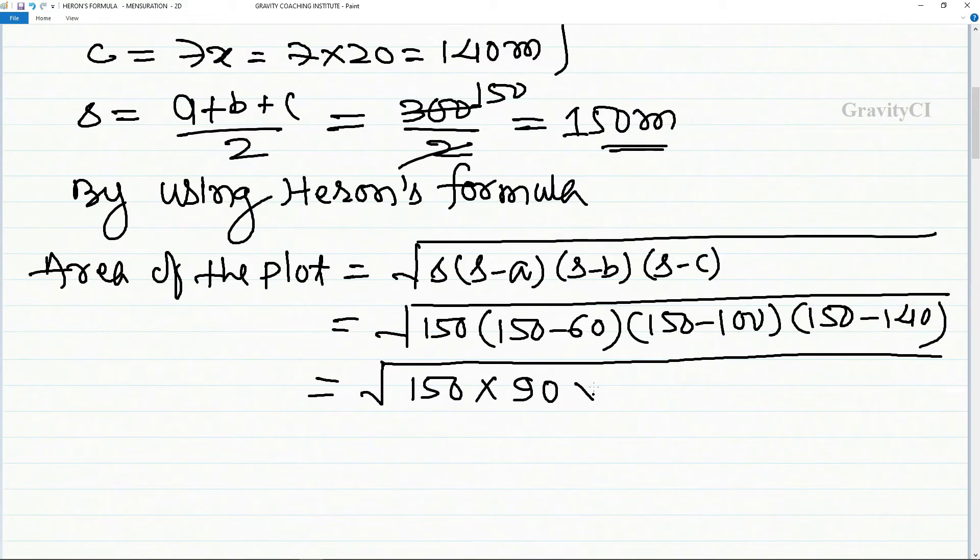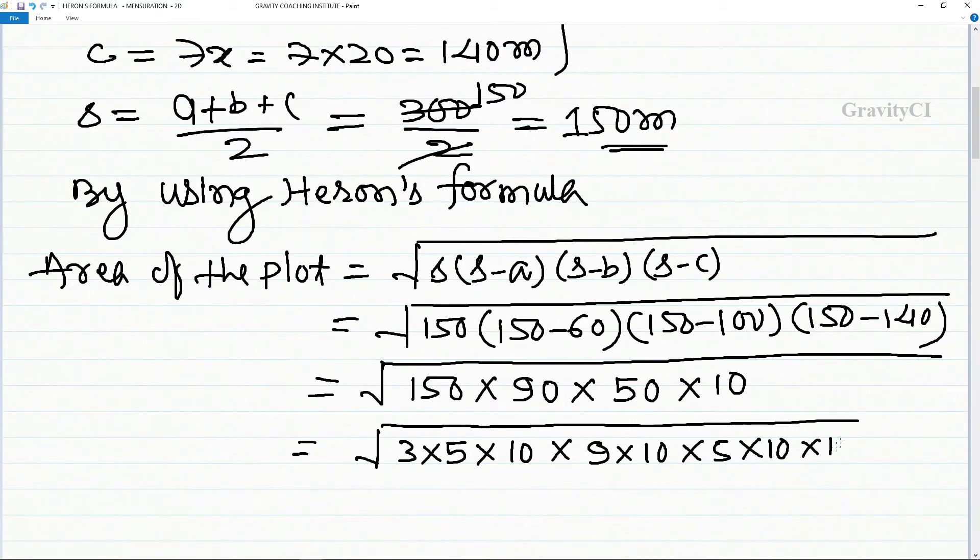We can write this as the square root of 3 times 5 times 10 times 9 times 10 times 5 times 10 times 10. Simplifying: 5 forms a pair, 10 forms a pair twice, and 9's root is 3.